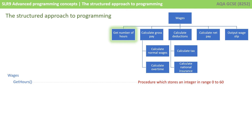If we start with the first block underneath wages, we need to write a procedure or function to get the number of hours. You can see I've identified that here as 'get hours.' It's taking in no parameters — this is simply a procedure which will store an integer, let's say in the range 0 to 60.